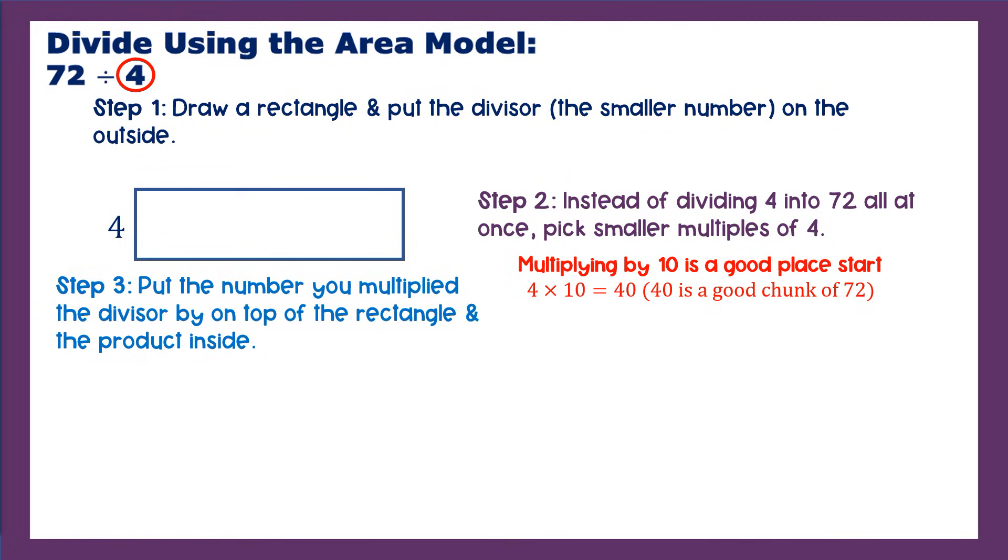So step three, you're going to put the number you multiply the divisor by, so 10 on the top of the rectangle. And then you're going to divide it up with this little line here so it doesn't get messy. And then you're going to put the product, 4 times 10, you need to put that inside the rectangle. You need to know that this 40 is here because you already have 40 out of the 72 that you're trying to divide into. So what's left over to divide into that? We really need to figure that out. We're going to subtract 40 from 72 and continue this process. So 72 minus 40 equals 32.